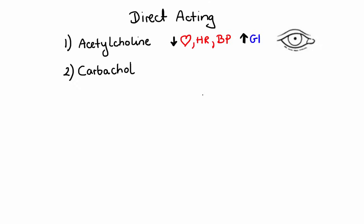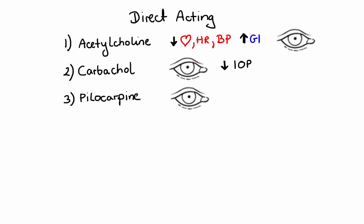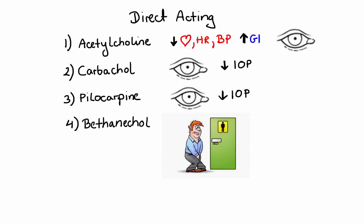However, carbachol is not very susceptible to acetylcholinesterases, so it has a fairly long duration of action. Its therapeutic use is restricted to constricting the pupil during eye surgery and decreasing intraocular pressure. Another drug in this group used ophthalmically is pilocarpine. Pilocarpine acts on smooth muscle of the eye to constrict the pupil and, more importantly, increases aqueous outflow resulting in a rapid drop in intraocular pressure, making it very useful in treating acute glaucoma attacks. Bethanacol selectively stimulates the urinary and gastrointestinal tracts and is given orally or subcutaneously to treat urinary retention or GI lack of muscular tone.